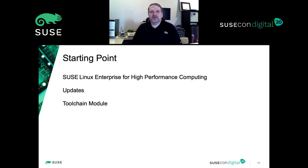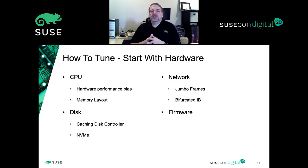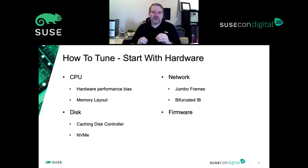Let's talk about how we tune, starting with hardware. One of the first things to do when benchmarking is to set the BIOS firmware settings to the performance bias for power. This disables a lot of power-scaling functionality, preventing frequencies from scaling up and down, which can affect results, and it also lowers latencies. Just doing that can give a fairly significant boost in some cases.